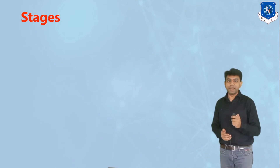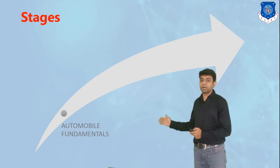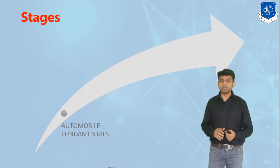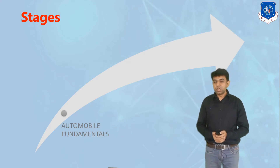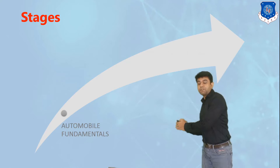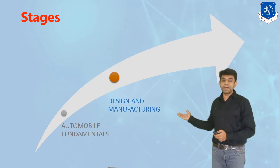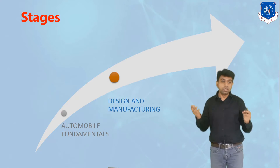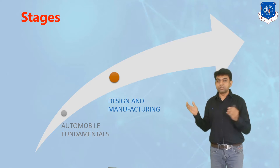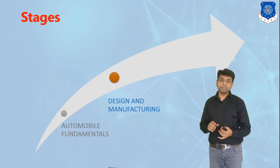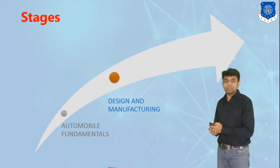Before going into that particular topic, let me elaborate the different stages of learning in the field of automobile engineering. First, we understand automobile fundamentals, which includes different measurement parameters such as toe-in, camber, caster, and all relevant parameters. Once clear on fundamentals, we move to the second part — design and manufacturing — where we learn how to design a particular automobile and how different components are attached.